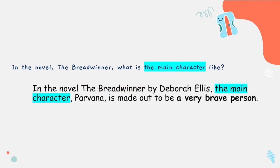We also used keywords from the question. We can see in the question some of the keywords were 'the main character,' and so we used those words in our response — we said 'the main character, Parvana.' And we went on to answer the question. The question asked what the main character is like, so we said that Parvana is made out to be a very brave person, answering the question.